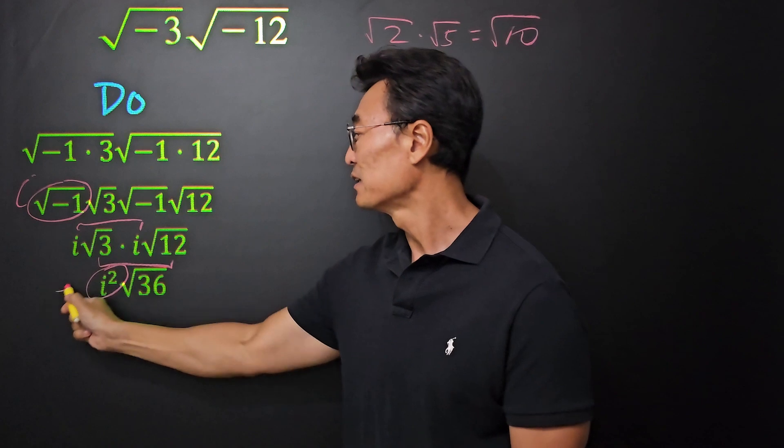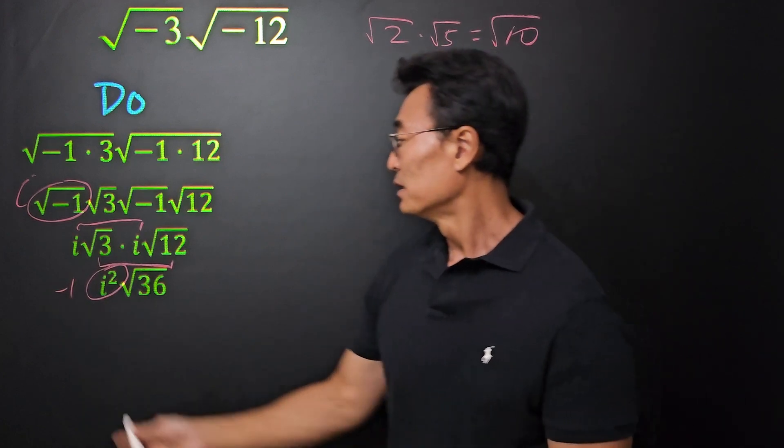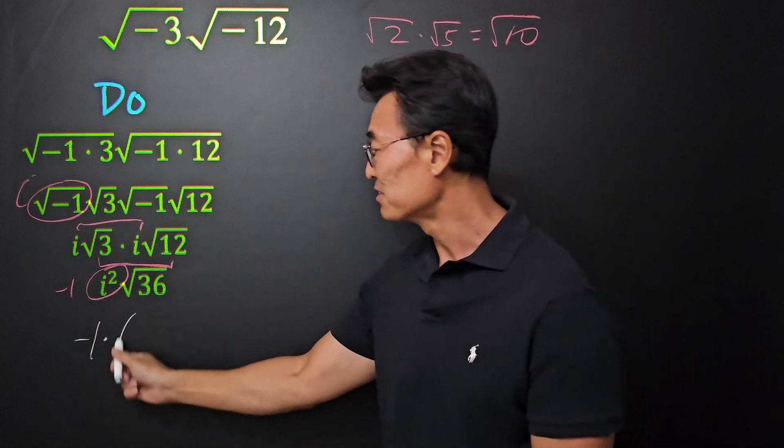Again, i squared is negative 1. Then we end up getting negative 1 from the i square, and square root 36 is 6.